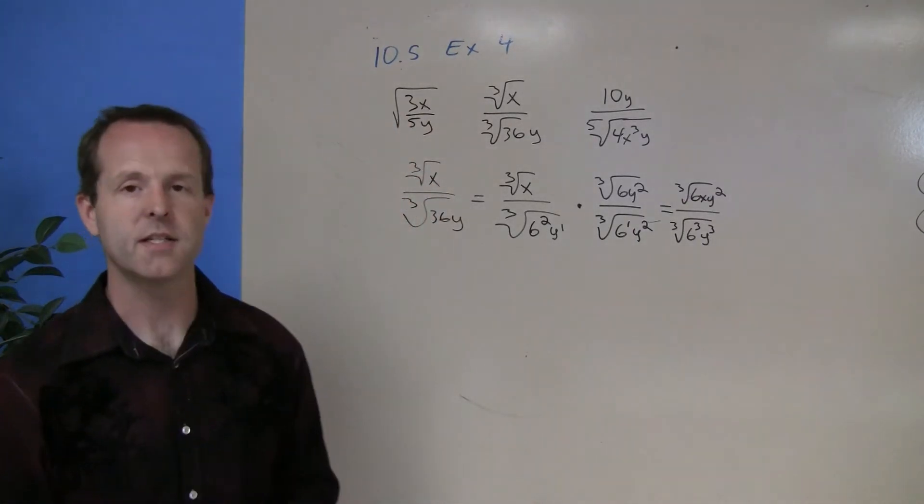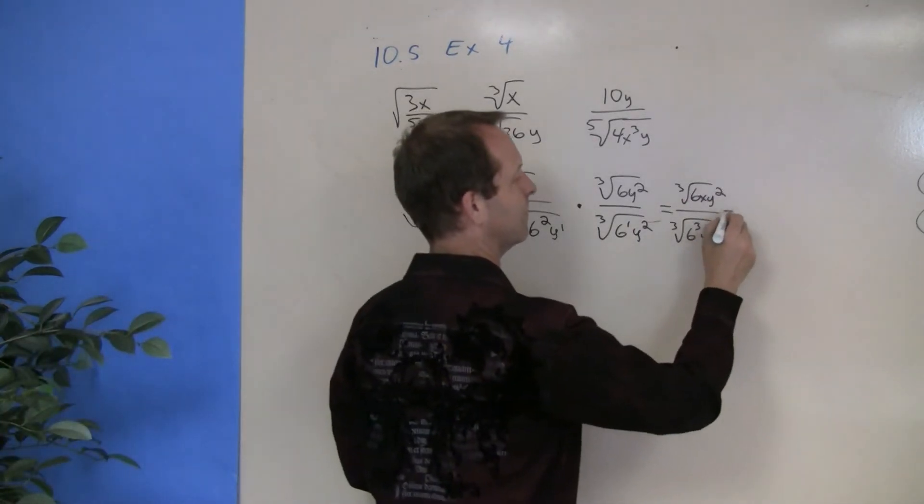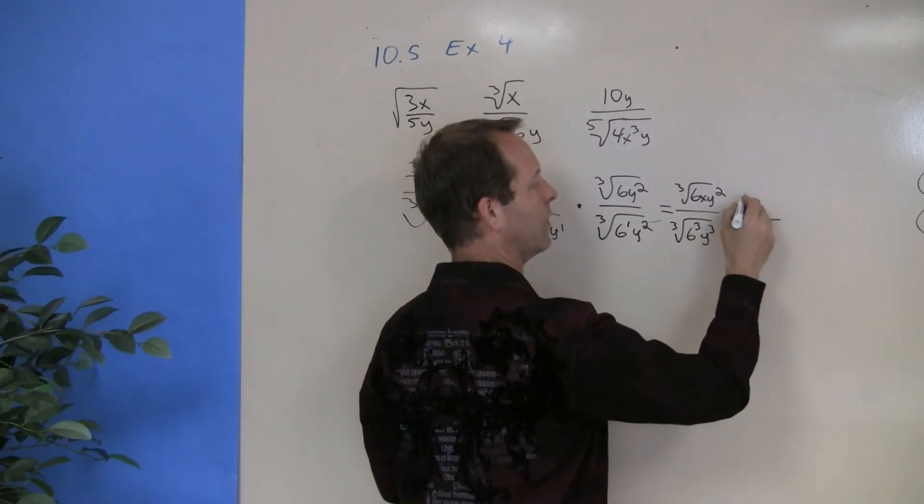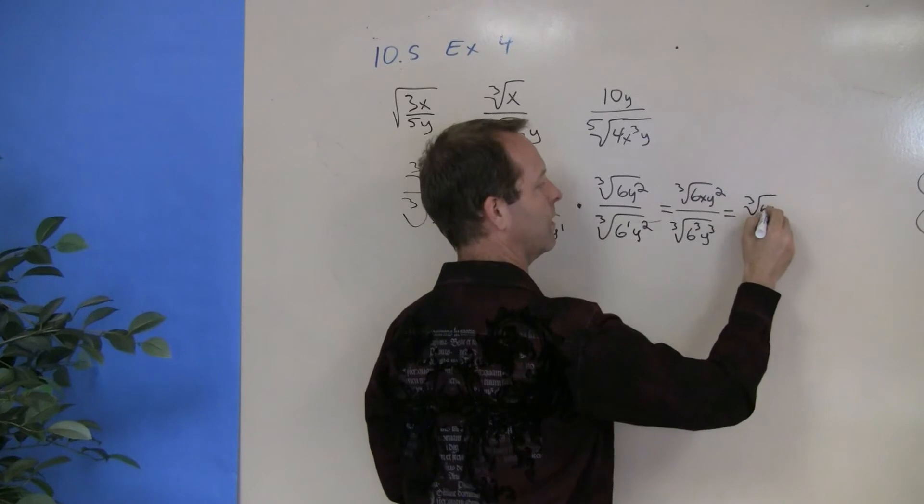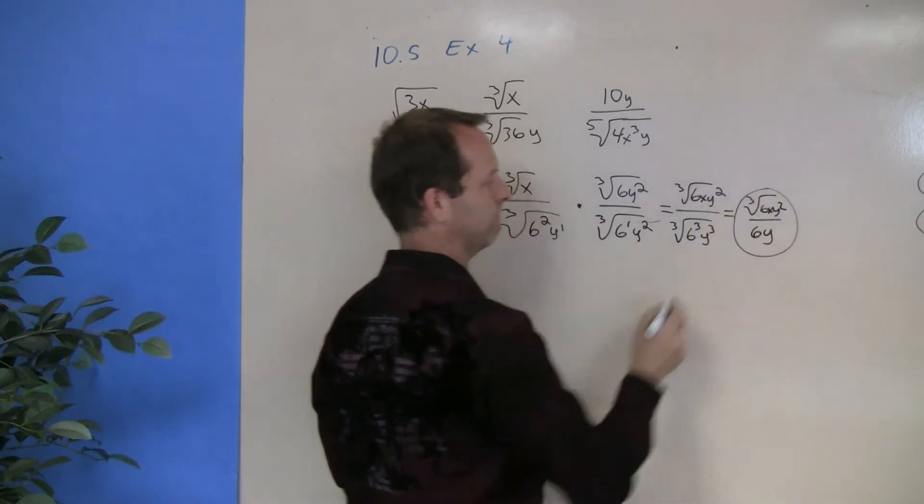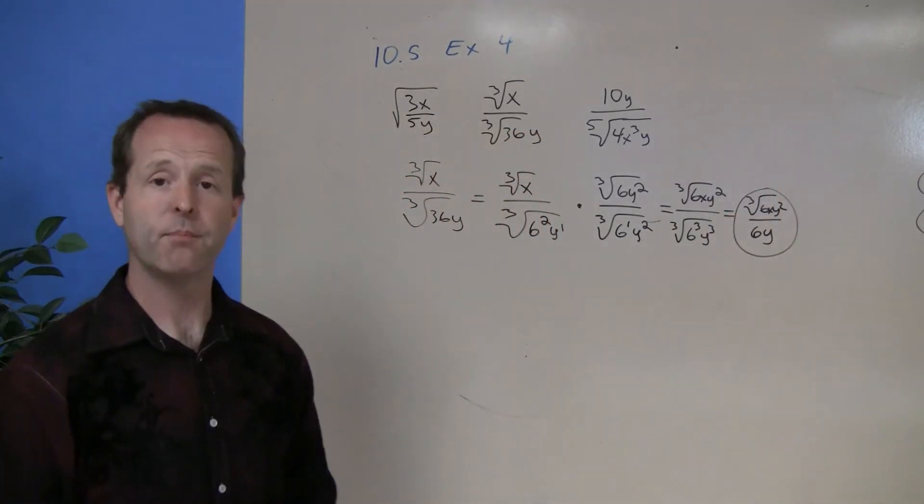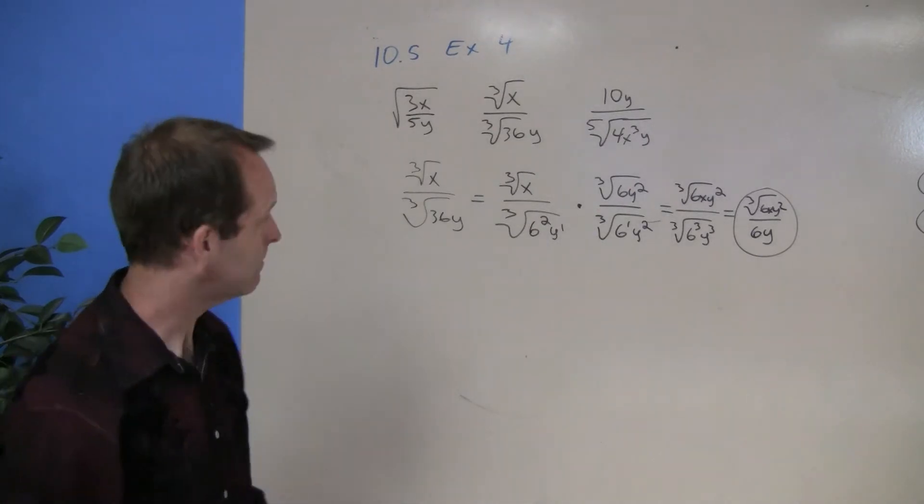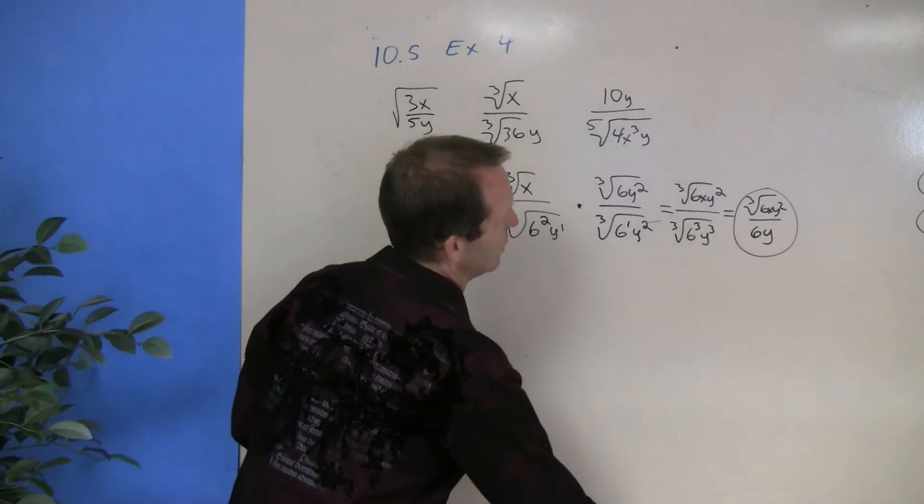And I think you can see the denominator now—cube root of all that stuff just becomes 6y, all over the cube root of 6xy squared. Now that problem has been completely reduced or rationalized.